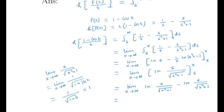So we have ln 1 minus ln(s / √(s² + 1)). Since ln 1 = 0, the final answer is minus ln(s / √(s² + 1)).